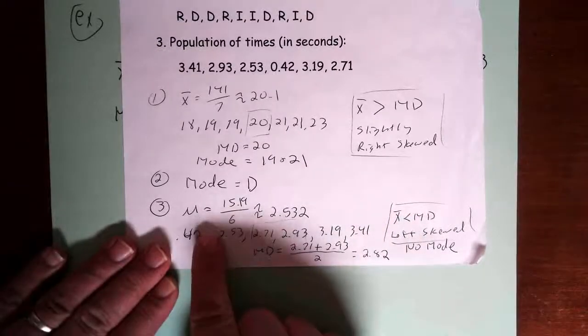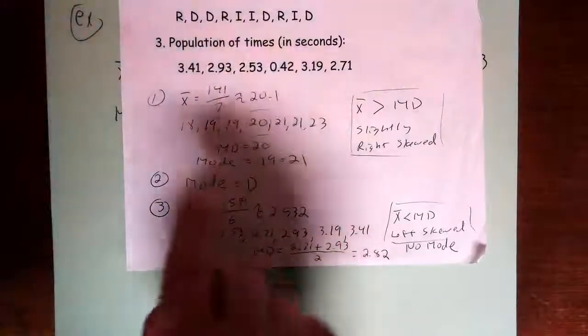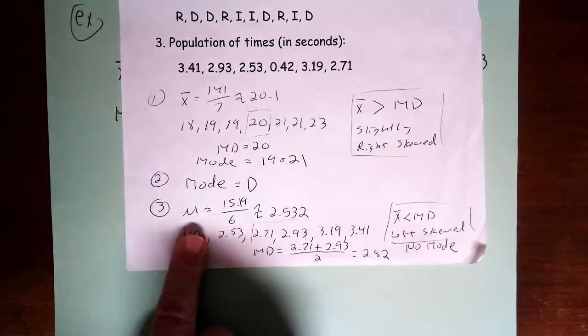And then the last one, you have a population of sample times. And notice, this is a population, so now instead of X bar, I'm using mu, because it's a population,